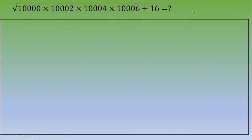When you have a square root to calculate, one option is to transform the quantity under the root into a perfect square. That way you can use the identity √(x²) = x, when x is a non-negative number.